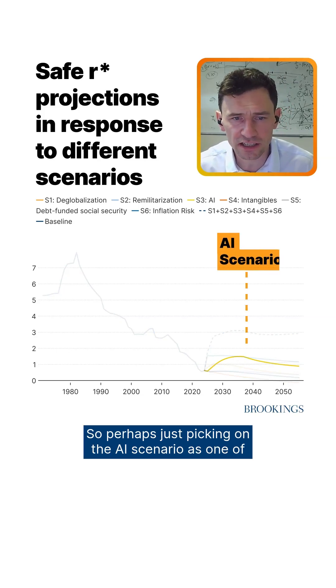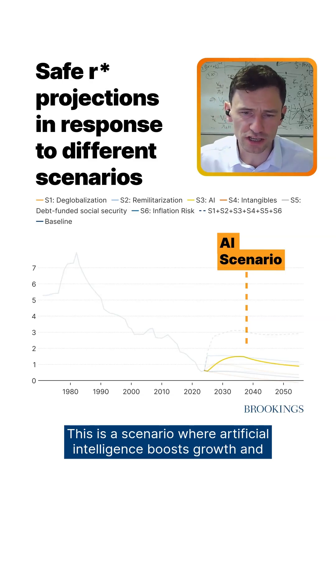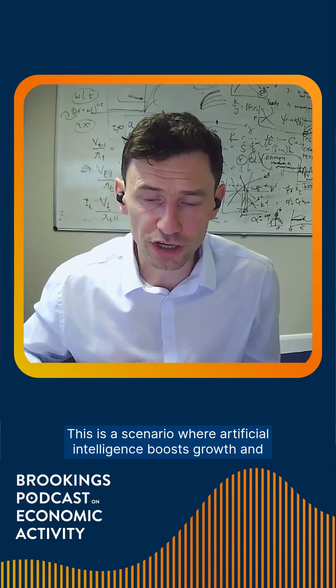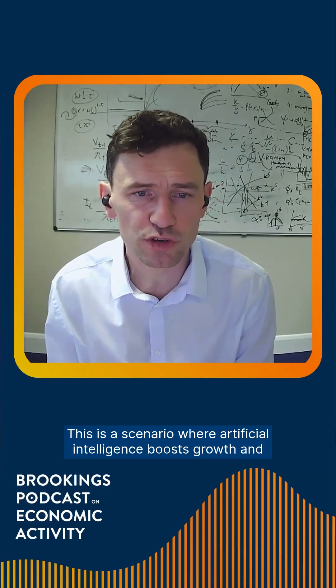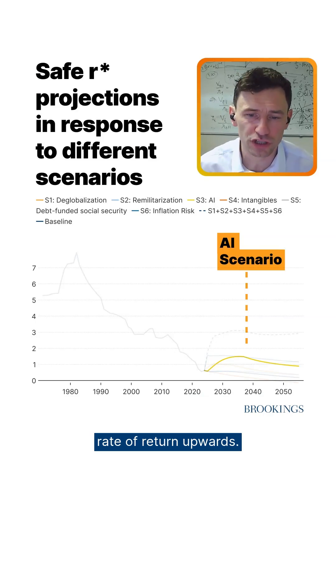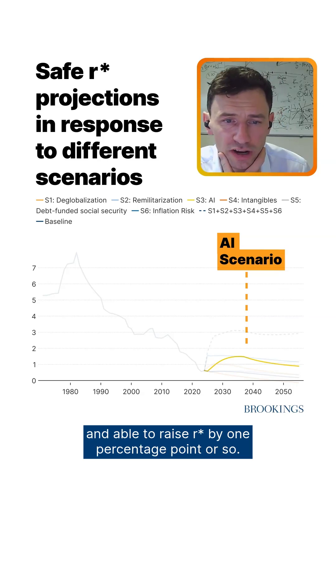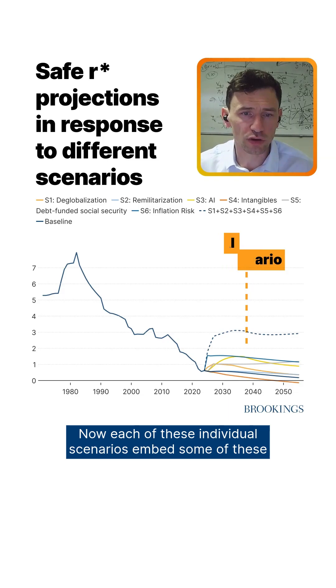Taking the AI scenario as one of the more interesting ones: this is a scenario where artificial intelligence boosts growth and leads to greater concentration and greater automation in the economy. All of that requires capital investment, which drives the rate of return upwards. Quantitatively, this scenario is able to raise R-star by about one percentage point.